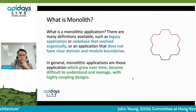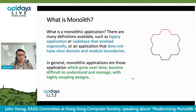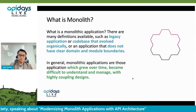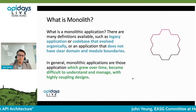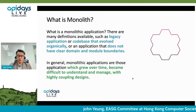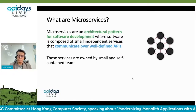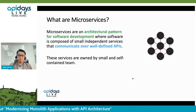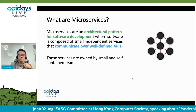So what is a monolithic application? There are many definitions available in the market. For example, a legacy application or code base that grew organically, and the application does not have a clear domain or module boundary. In general, we can summarize that this kind of application grows over time, becomes difficult to understand, and is very difficult to manage because of its highly coupled design. Microservices, on the other hand, is a new software development model or pattern where the software is composed of many independent services that can be scaled independently, and they communicate with each other over a well-defined API.